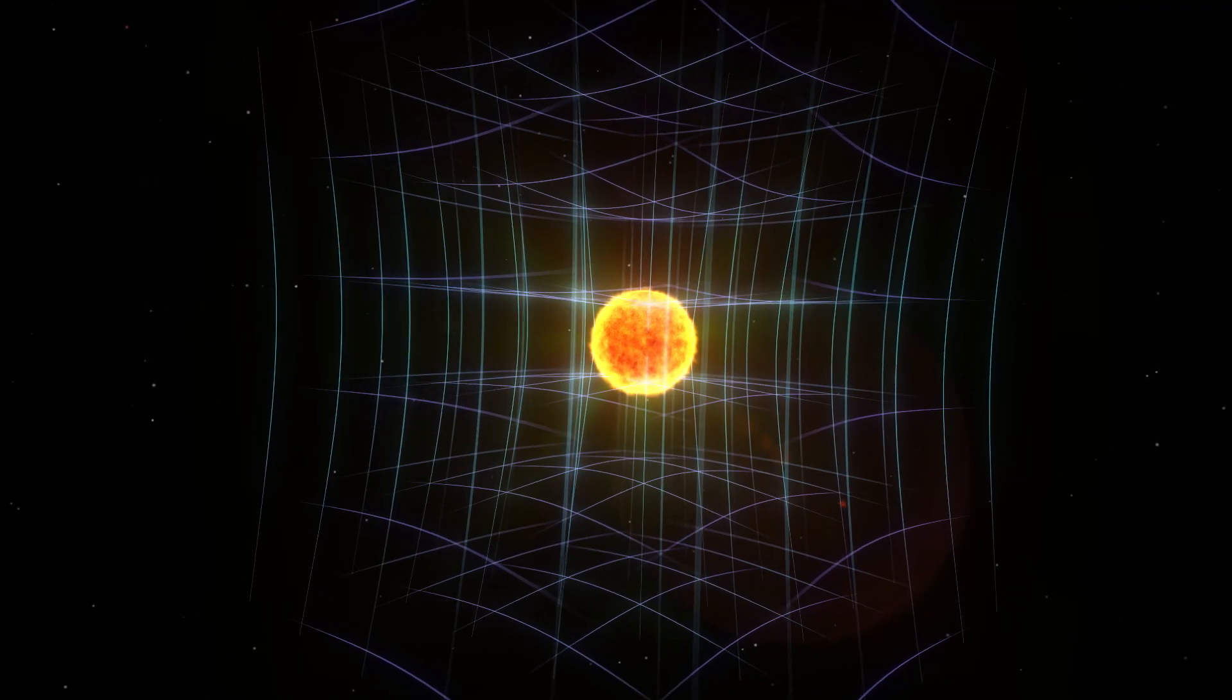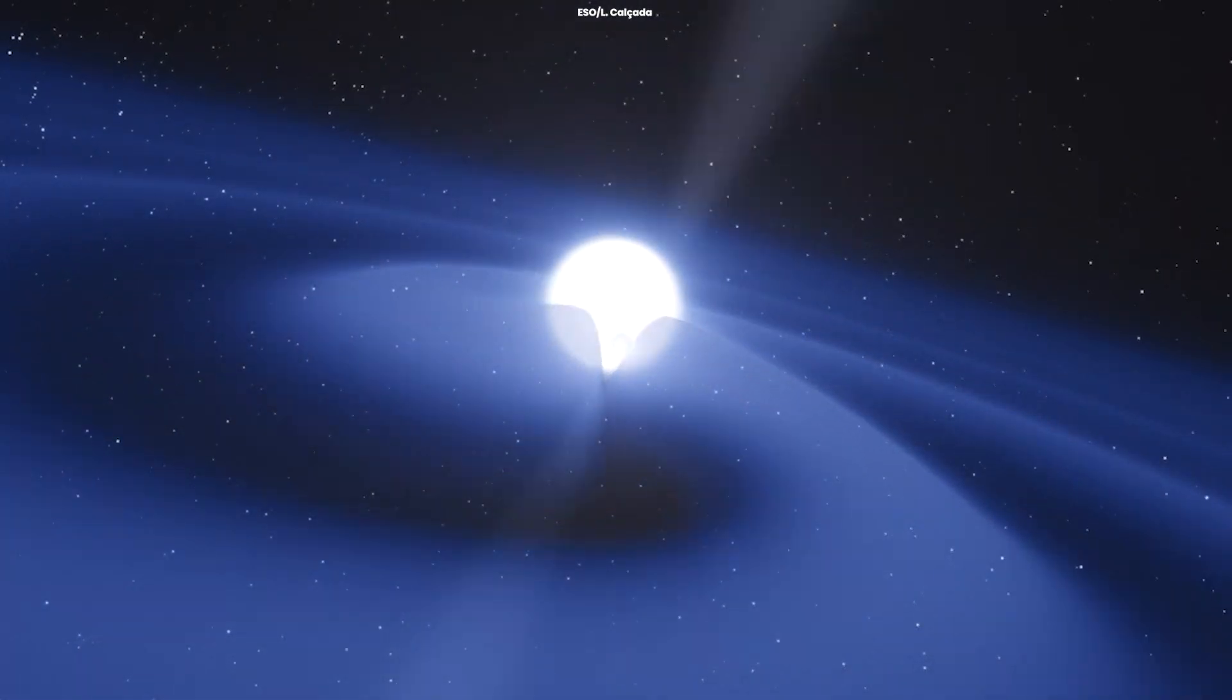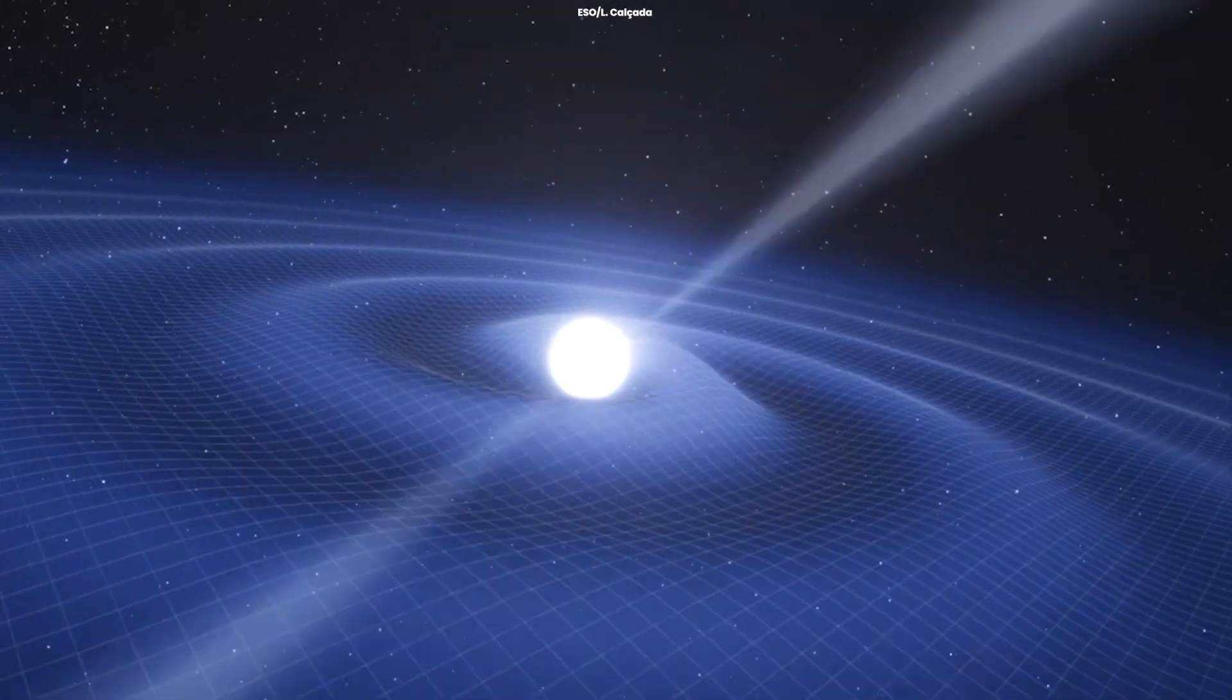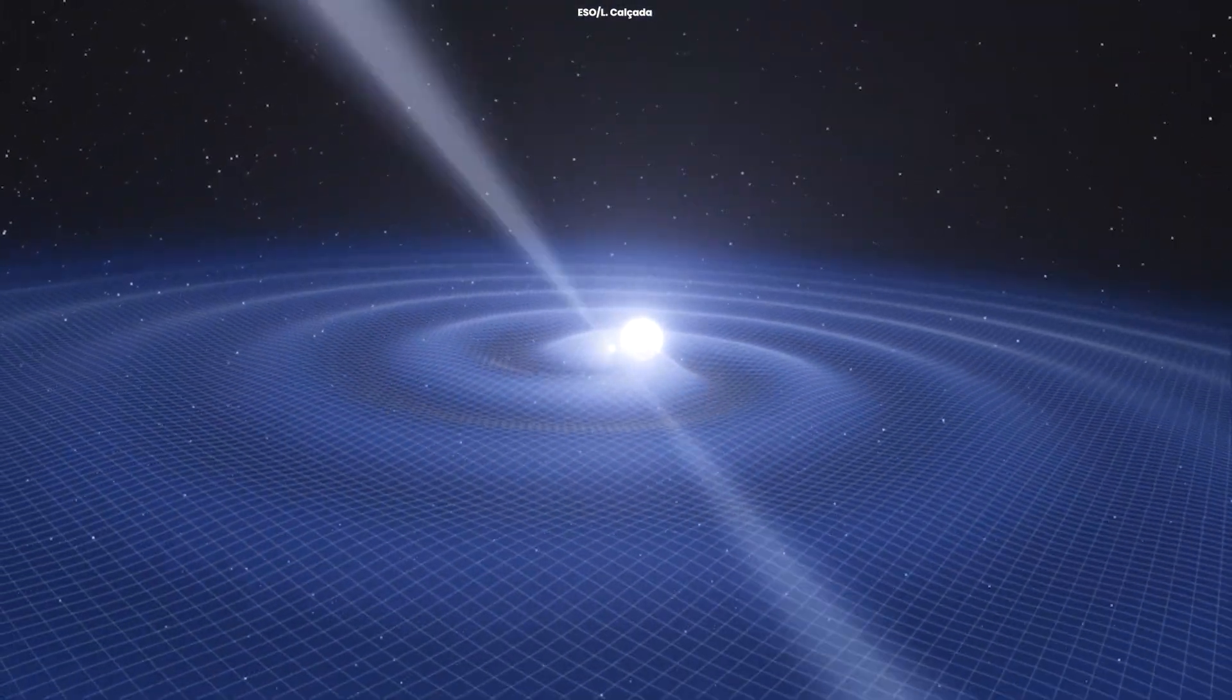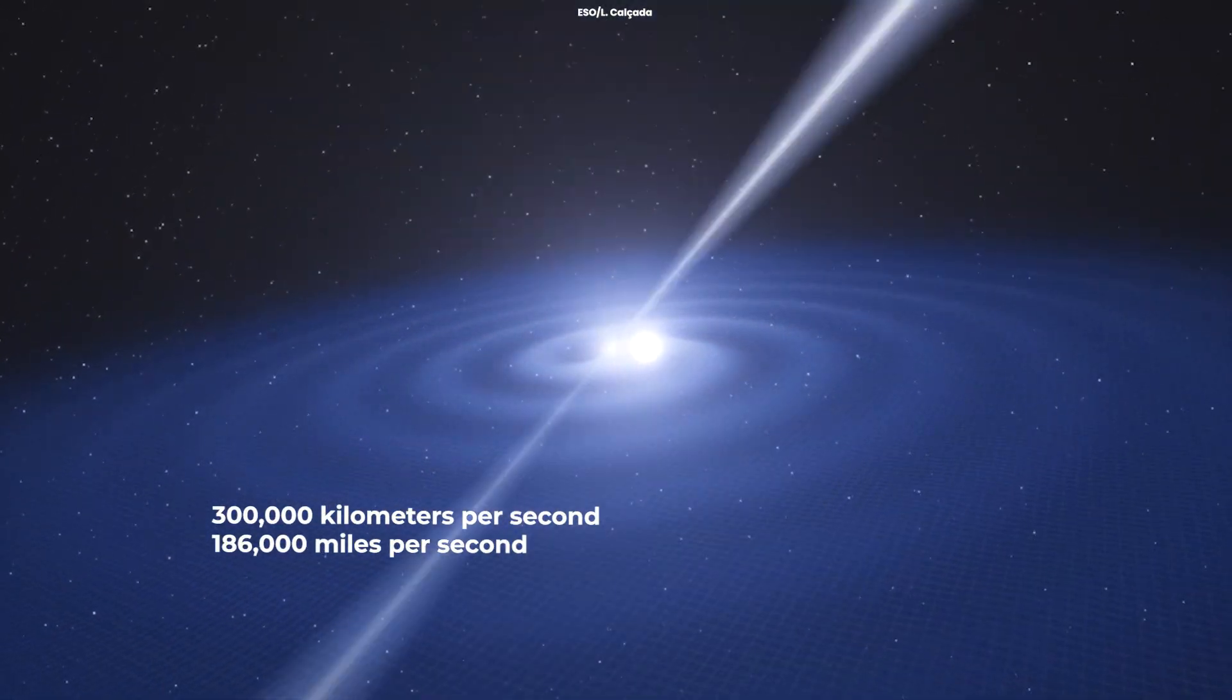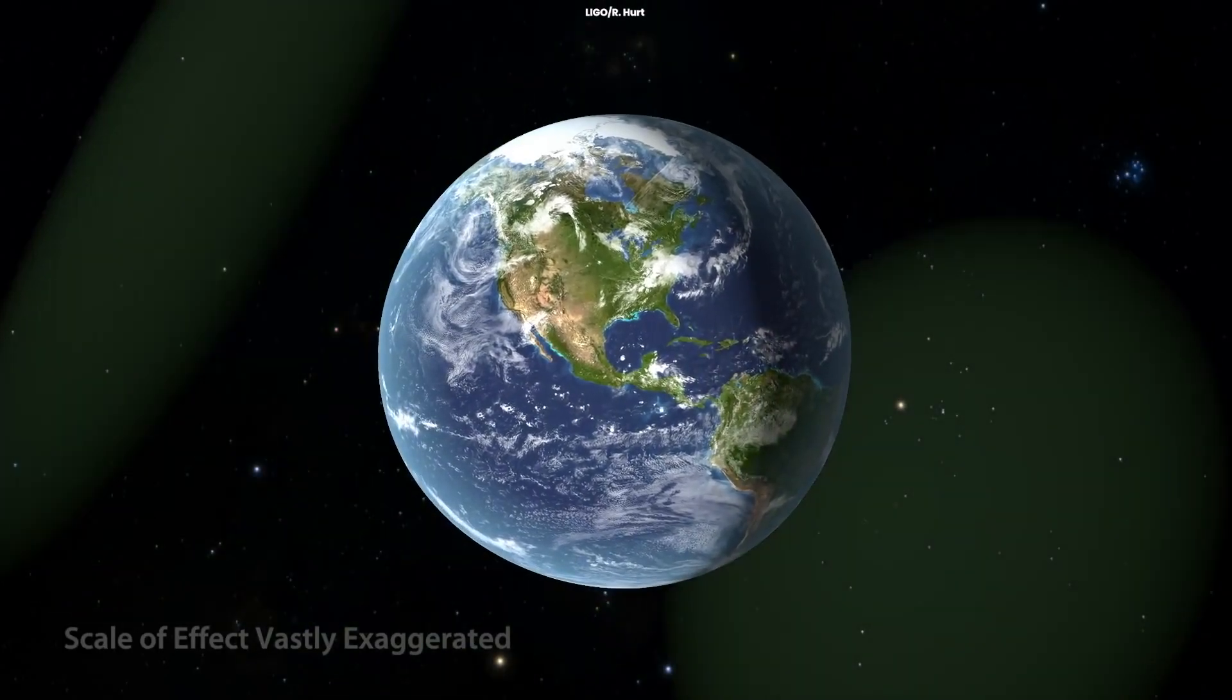All the matter in the universe exists in the fabric of spacetime. Every massive object that accelerates produces gravitational waves carried out by spacetime itself. These gravitational waves travel at the speed of light, 300,000 km per second or 186,000 miles per second. And as they travel, they squeeze and stretch anything in their path.